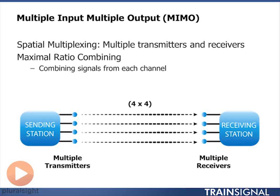A lot of times you don't go up to 4x4 MIMO simply because of client restrictions in terms of form factor and size, as well as power consumption. Putting lots of antennas on a device is really going to eat into your power level.